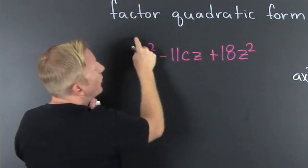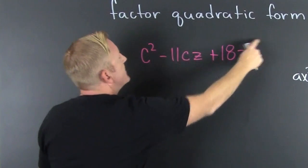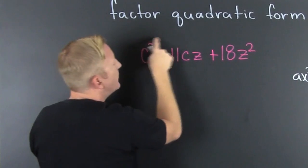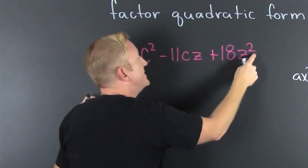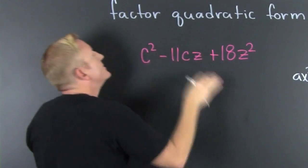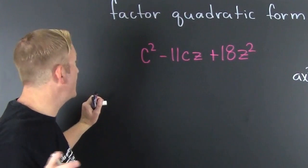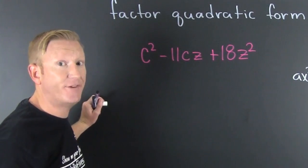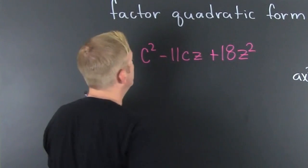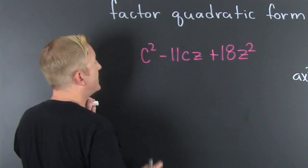We see it's quadratic in form this way and this way. C squared and C first. Z squared and Z first. So it's quadratic both ways. If you see it quadratic both ways, forward and backward, then we can still factor that using our factoring techniques.